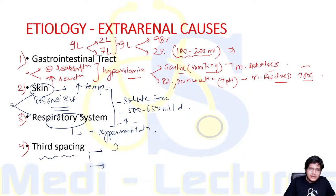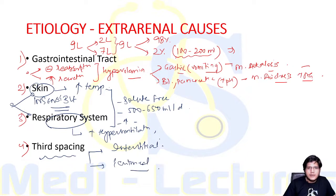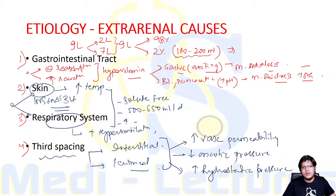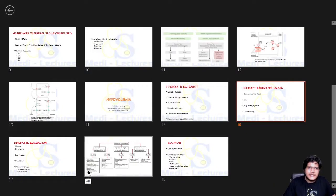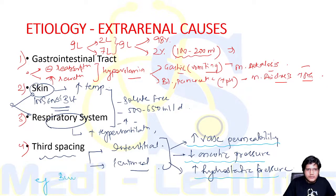Third spaces are spaces like the peritoneum and pleural cavity. Third spacing usually occurs in interstitial spaces and the peritoneal cavity due to increased vascular permeability, decreased oncotic pressure from hypoalbuminemia, or increased hydrostatic pressure. Examples of conditions with third spacing include burns, pancreatitis, and sepsis.